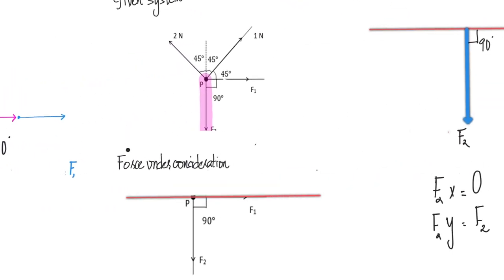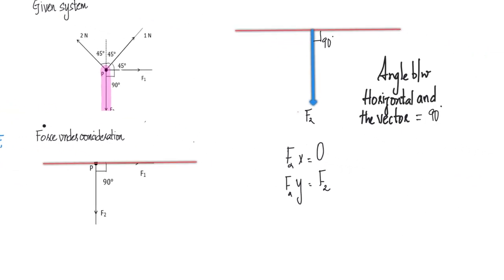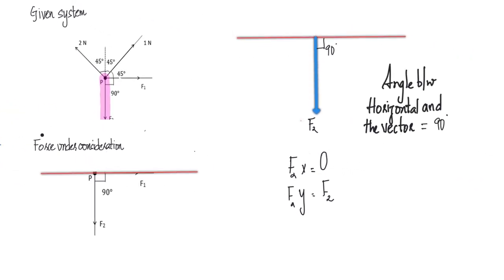The second force is F2. We are resolving it with respect to the horizontal, so we draw the horizontal and then the vector. The angle between the horizontal and F2 is 90 degrees, so the horizontal component is 0. The vertical component is the vector itself: F2y = F2.